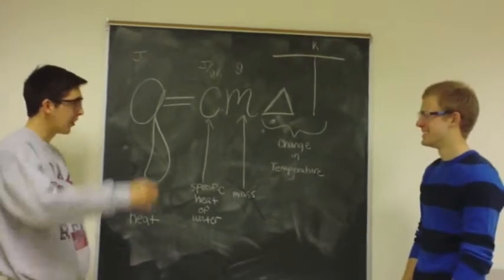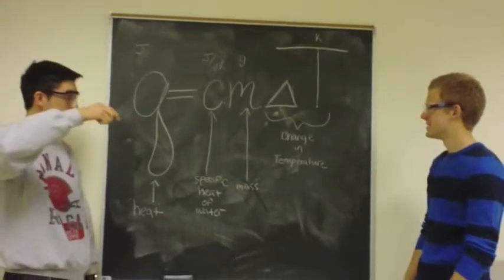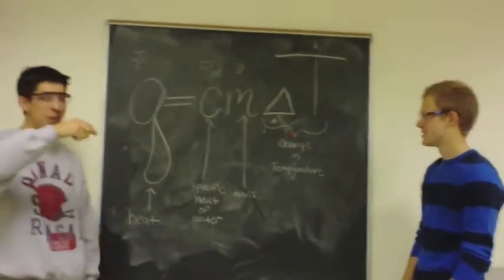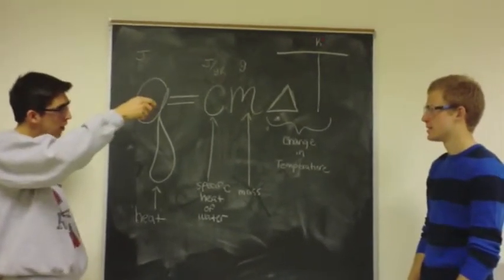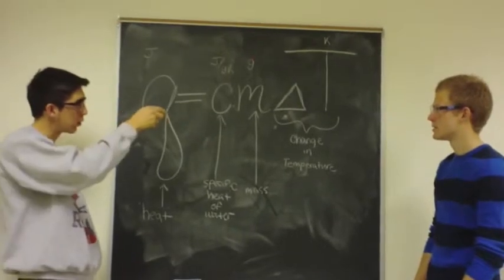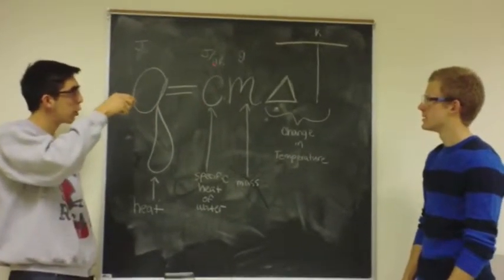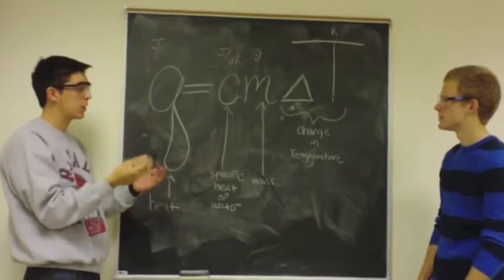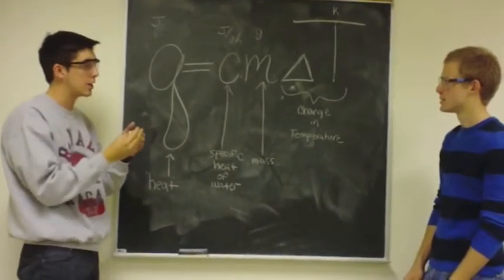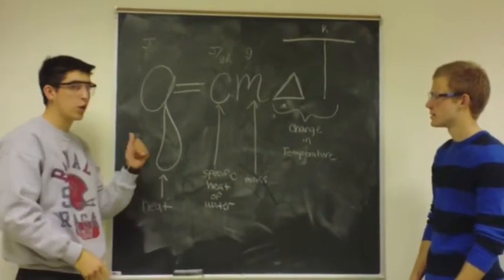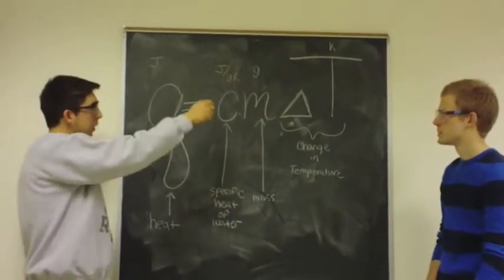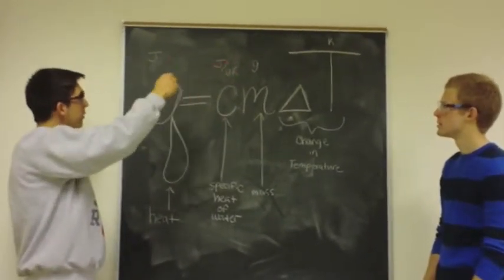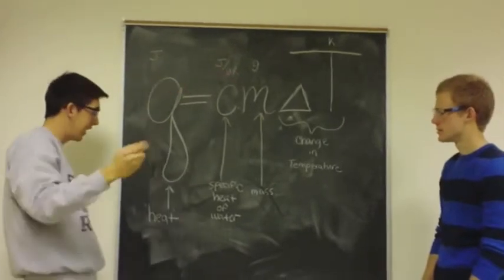Now, delta T stands for the change in temperature, which is in units kelvin, and then our mass is in units grams. Specific heat is in joules per gram kelvin, which also means the amount of energy, or heat, to raise 1 gram of water 1 degree kelvin. You see that the grams and the kelvin cancel, we're left in joules, or units of heat.